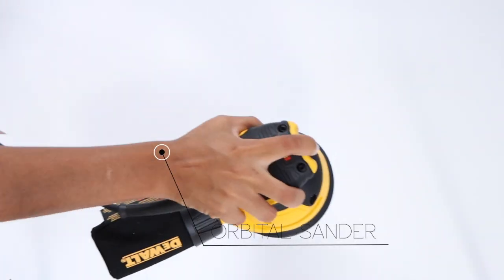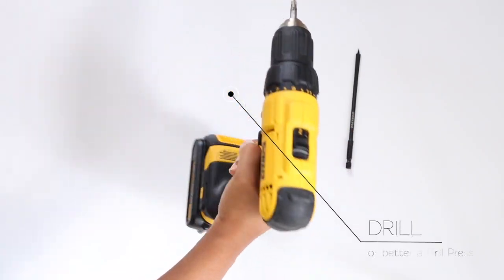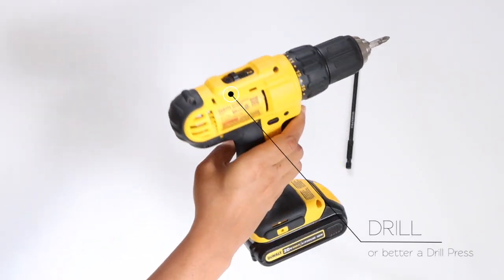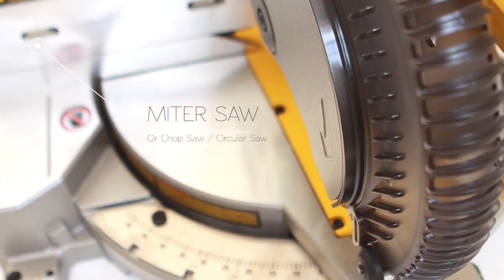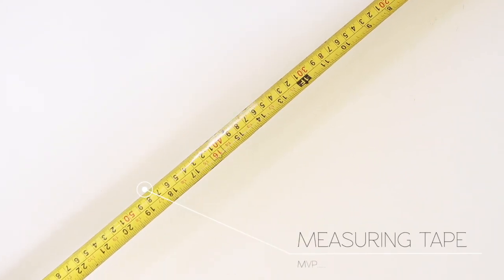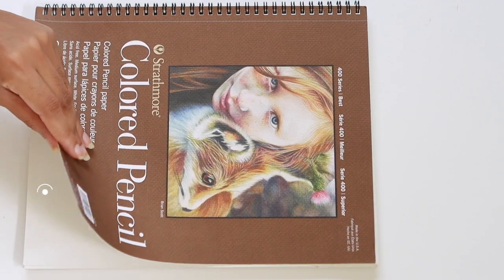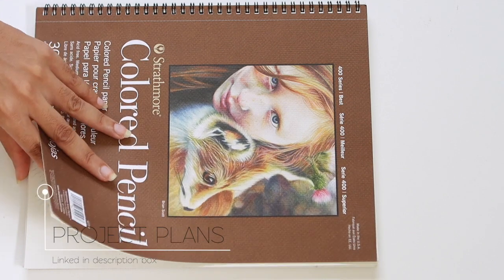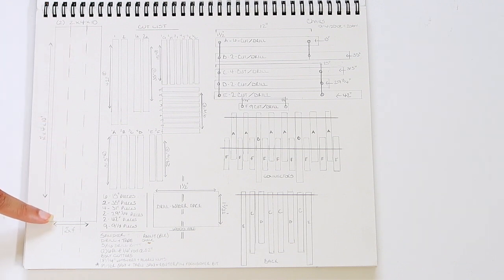Quarter inch washers and quarter inch hex nuts for holding your chair together. If you're making one chair, you will need eight washers and eight nuts. If you're making two chairs, just double it. You'll need 16 of each. If you're making three chairs, how many hex nuts and how many washers do you need? Comment below.